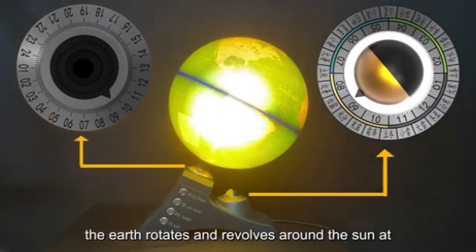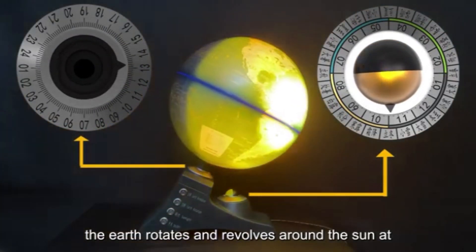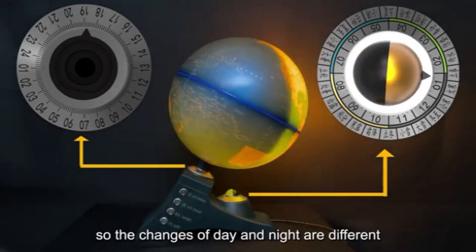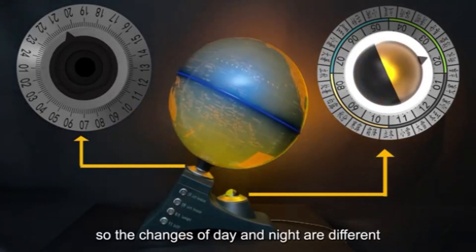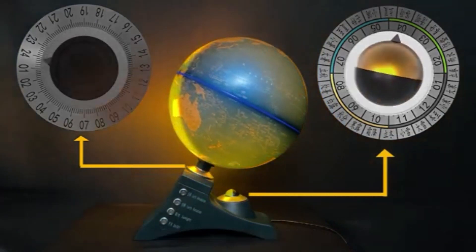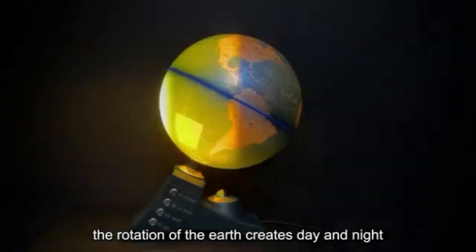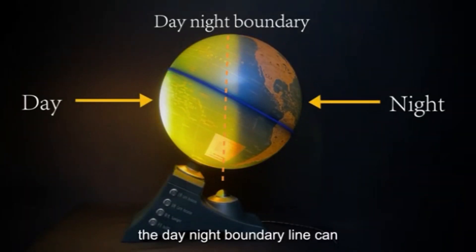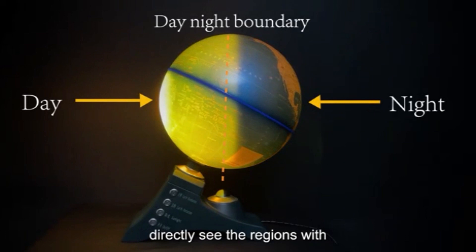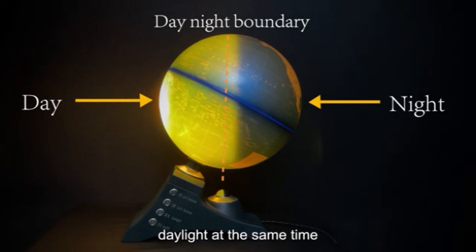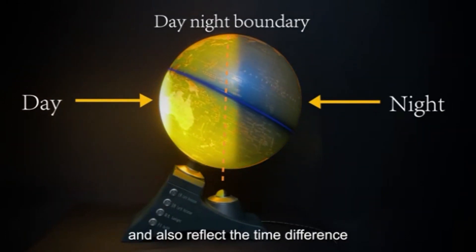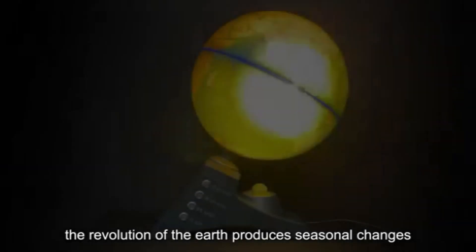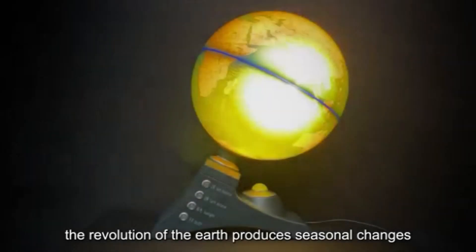The Earth rotates and revolves around the Sun at every moment, so the changes of day and night are different from moment to moment. The rotation of the Earth creates day and night, and the day-night boundary line shows regions with daylight at the same time, also reflecting the time difference between different areas. The revolution of the Earth produces seasonal changes.